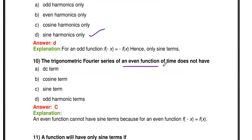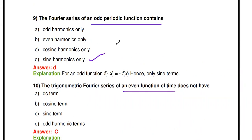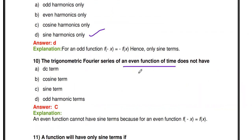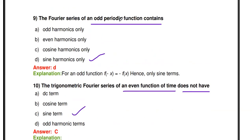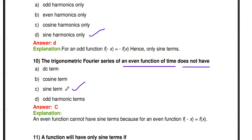Next question: The trigonometric Fourier Series of an even function does not have which term? For an odd function, the Fourier Series contains sine harmonics. For an even function, the Fourier Series does not contain sine terms — only cosine and DC terms are present. So the even function does not have sine terms.